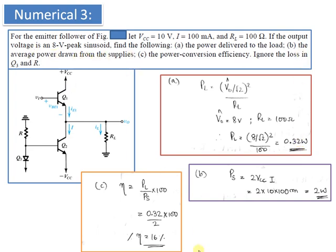For part B, the average power drawn from the supplies: the total supply power PS equals 2 times VCC times I. So 2 times 10 times 100 milliamps gives PS equal to 2 watts. Finally, part C, power conversion efficiency equals PL divided by PS times 100, giving efficiency equal to 16 percent. This confirms what was mentioned in the Class A output stage tutorial: though the theoretical maximum efficiency is 25 percent, in practical situations it lies between 10 to 20 percent, and here we mathematically obtain 16 percent.